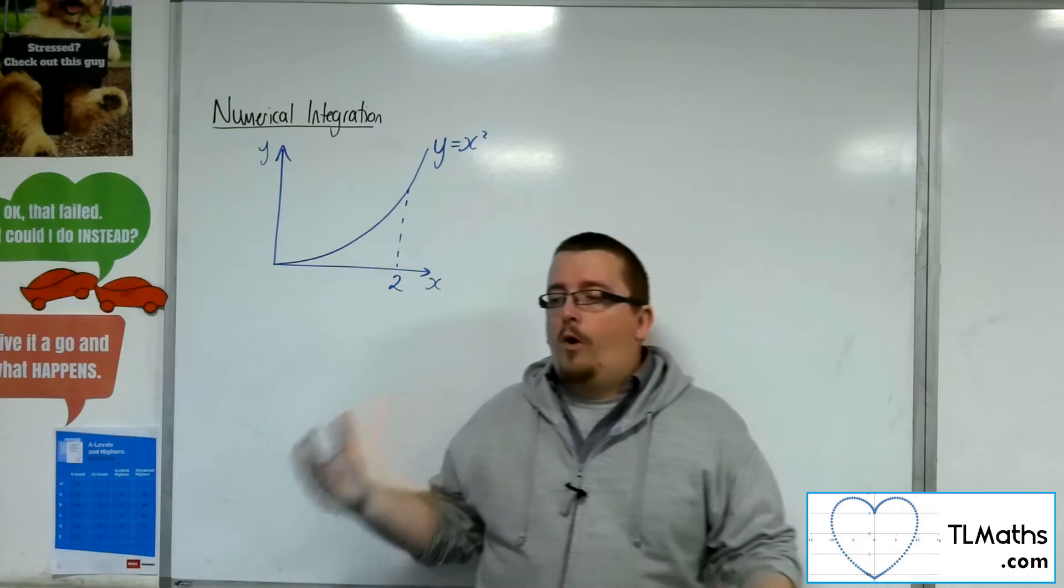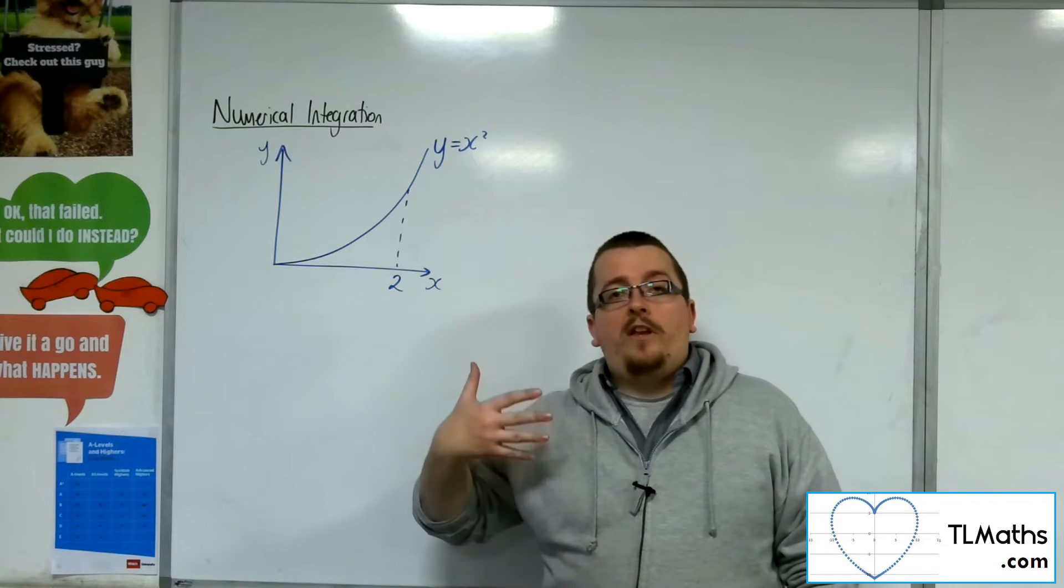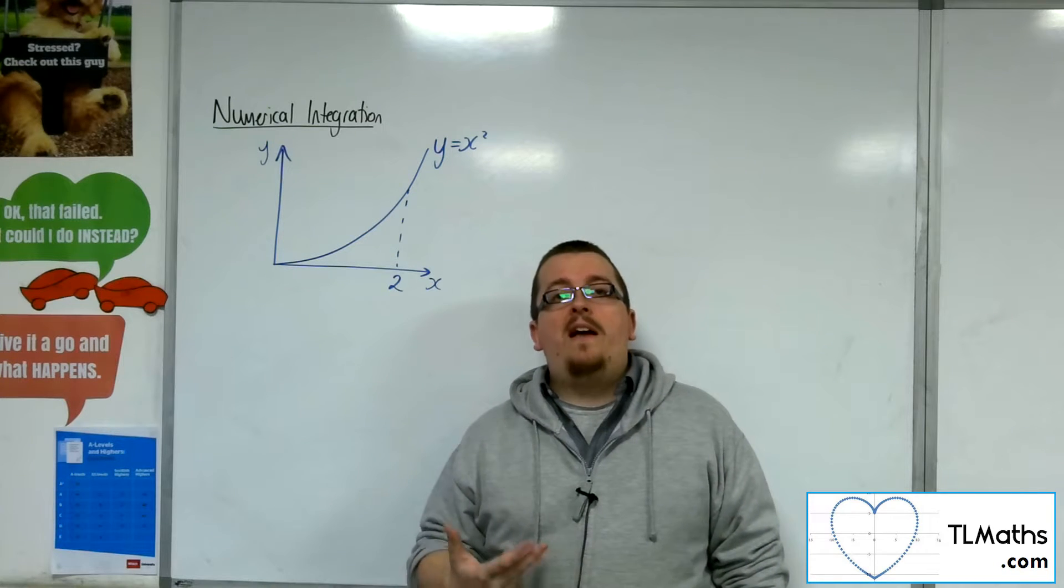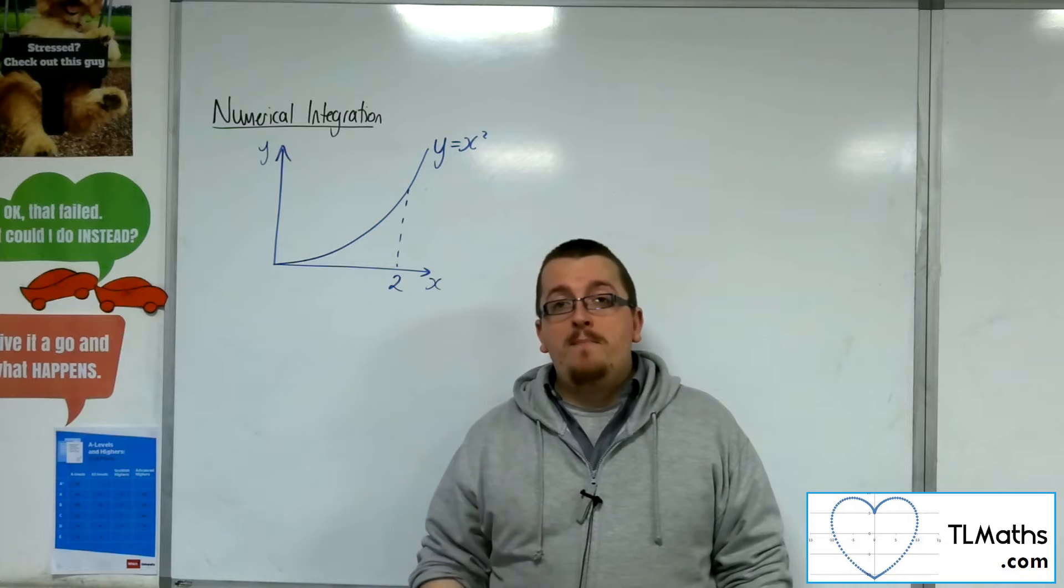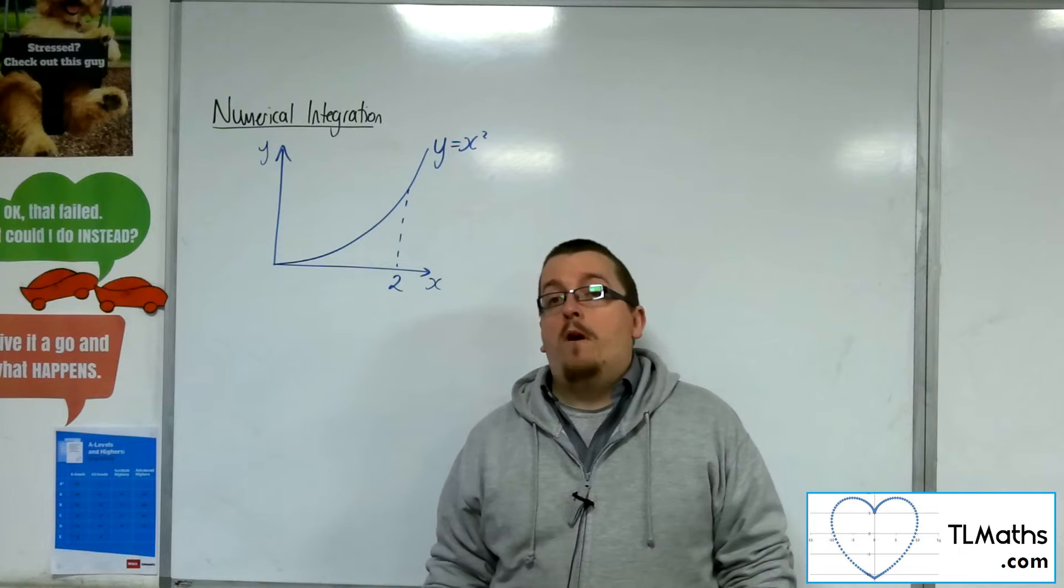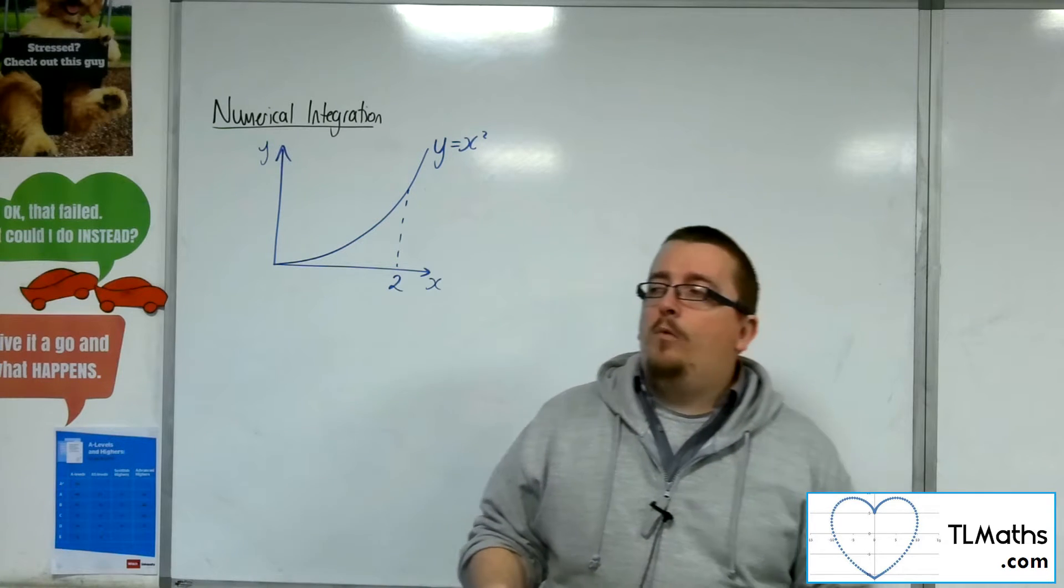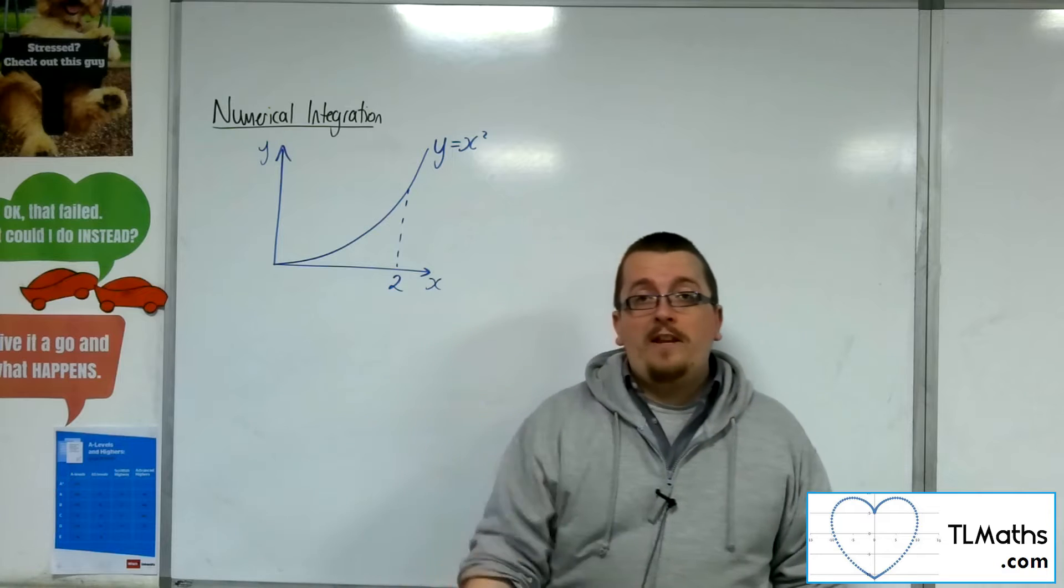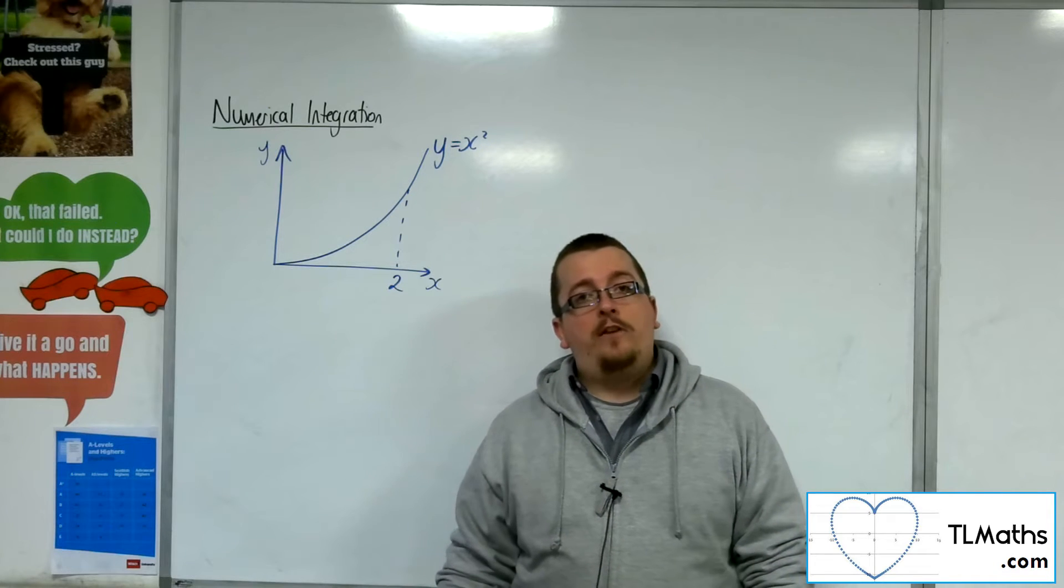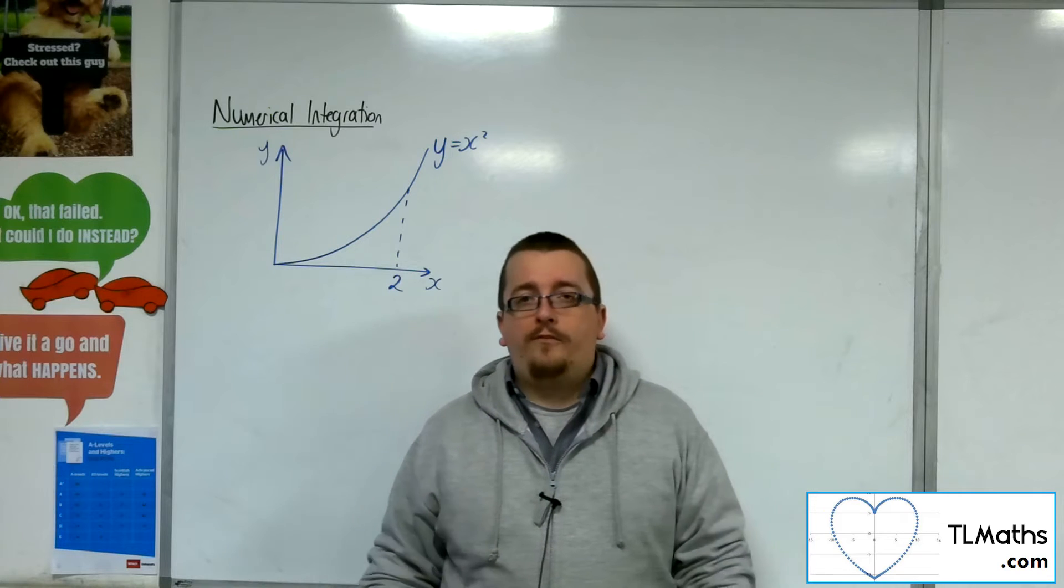So far, what we've looked at is using rectangles, which is otherwise referred to as a Riemann sum, R-I-E-M-A-N-N for those who might want to Google it. We've also looked at the trapezium rule, estimating the area using trapeziums. But they're not the only ways of doing it.